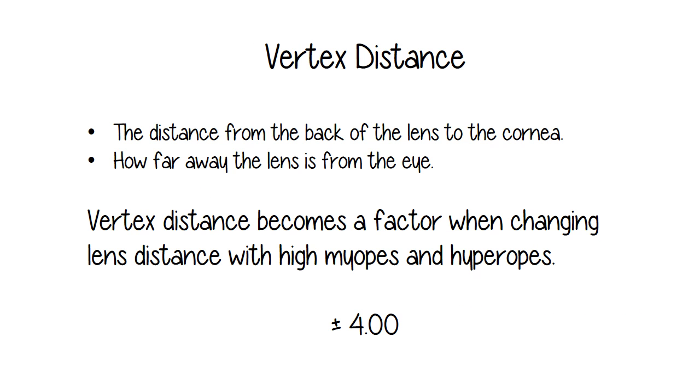Vertex distance is the distance from the back of the lens to the cornea, or in other words, how far away the lens is from the eye. Vertex distance becomes a factor when changing lens distance, for instance, if you're going from glasses to contacts or vice versa. With prescriptions under minus four or plus four, it doesn't matter much. But when you get into higher prescriptions, you really need to take it into consideration.